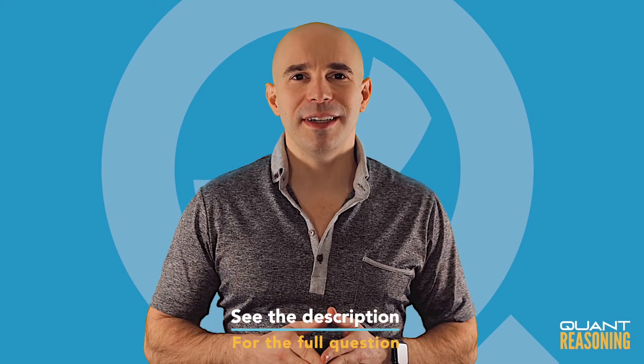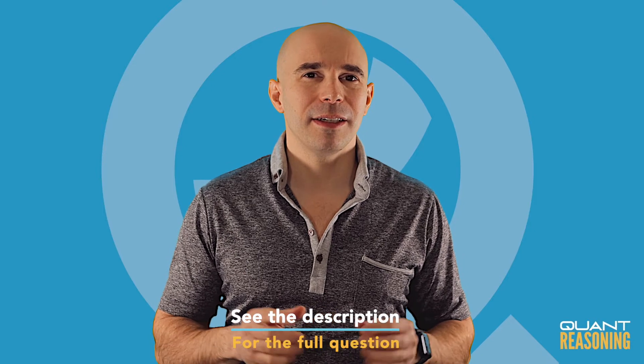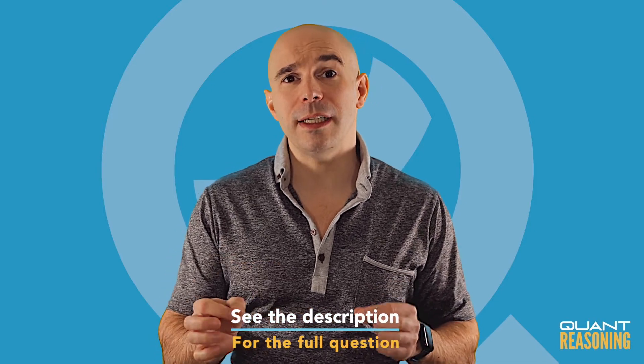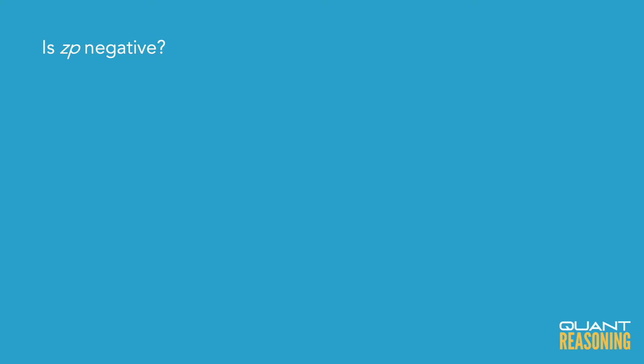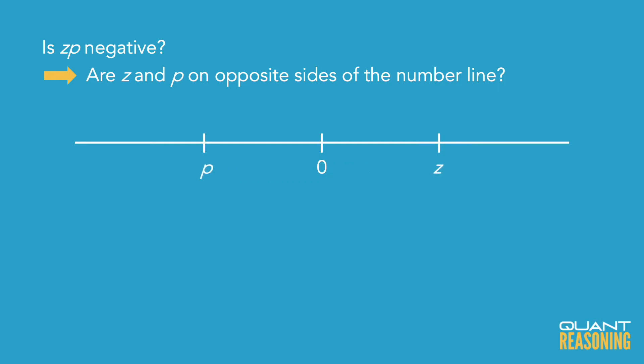Is ZP negative? What's that really asking? They want to know whether Z and P are on opposite sides of zero on the number line. After all, those are the circumstances under which the product Z times P will be negative. So it's really important that we rephrase the question: if we draw a number line and put zero in the middle, are Z and P on opposite sides of zero, or are they both on the same side?